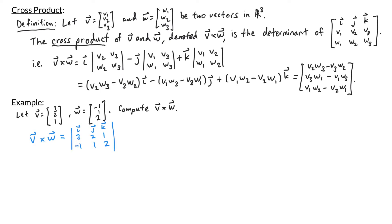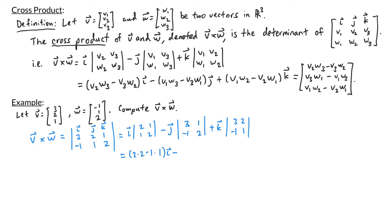Doing a cofactor expansion along the first row: i times the determinant of (2,1; 1,2) minus j times the determinant of (3,1; -1,2) plus k times the determinant of (3,2; -1,1). That's (2·2 - 1·1)·i minus (3·2 - 1·(-1))·j plus (3·1 - 2·(-1))·k. Simplifying we get 3i - 7j + 5k, which is the vector (3, -7, 5).